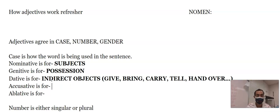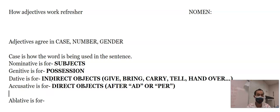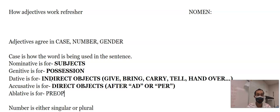The accusative is used for direct objects and after ad or per, which is through. The ablative is used for prepositions. So we have the words like cum, in, ex. Those are the prepositions we've had so far.